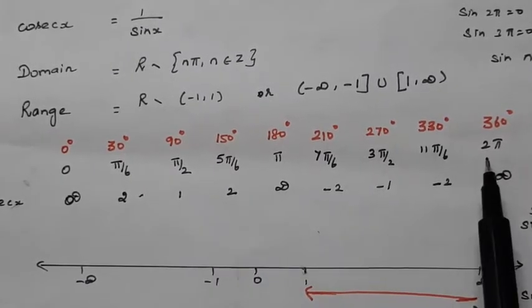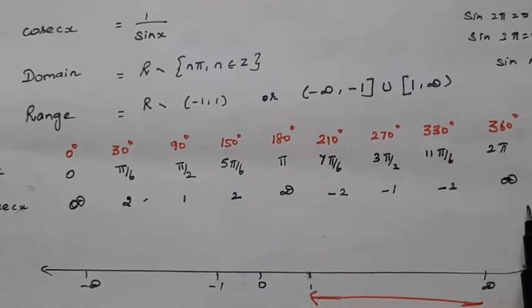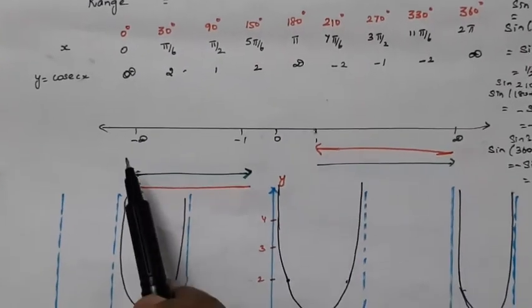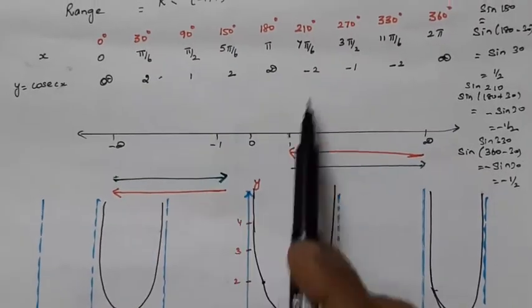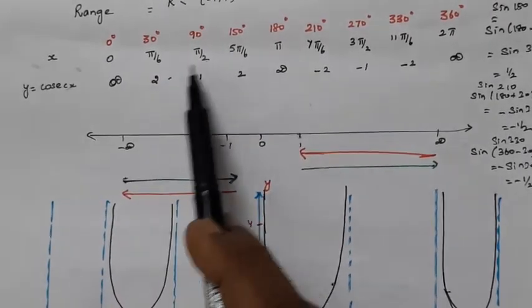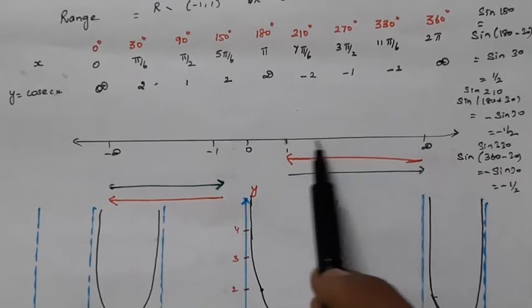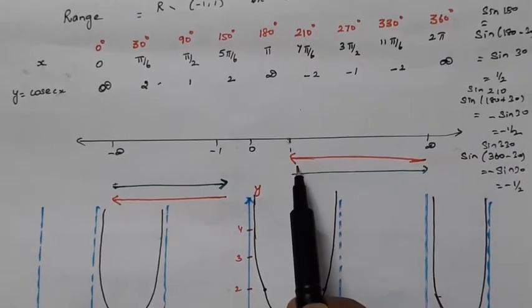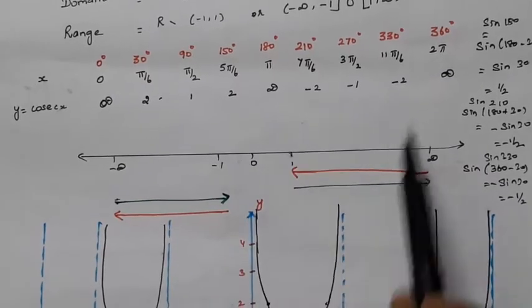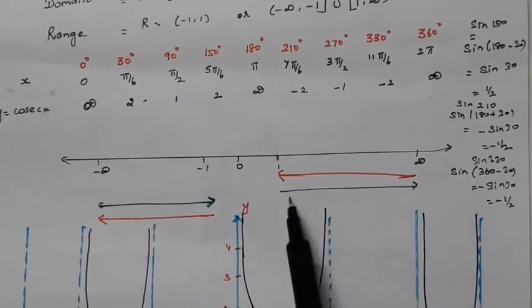Using these values we can observe the range. For angles in the first quadrant (0 to π/2), cosecant decreases from +infinity to 1. For angles in the second quadrant (π/2 to π), cosecant increases from 1 back to +infinity. So in the first two quadrants, cosecant takes values from 1 to +infinity.